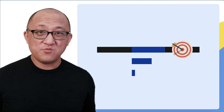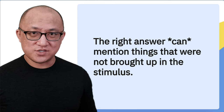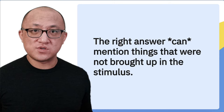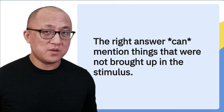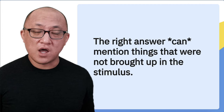So if you can see one of the missing links in an argument, just be ready for the correct answer on necessary assumption questions to be weaker forms of that umbrella assumption. Tip number four is to remember that the right answer on necessary assumption questions can mention things that were not brought up in the stimulus. Sometimes students have this bad habit of reflexively eliminating answers that mention new ideas not brought up in the stimulus. As a general matter, it's good to be skeptical of such answers, but you can definitely have arguments that must assume things that were not specifically mentioned.